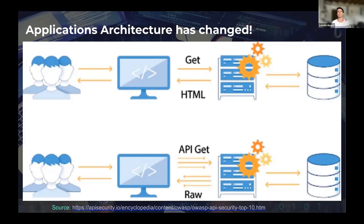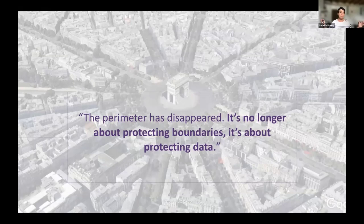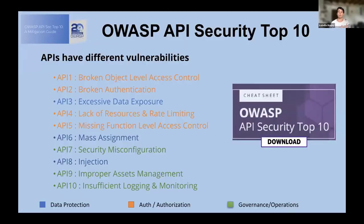Security has really changed. It used to be all about the perimeter — building walls around ourselves. But when you create APIs, you punch holes in those walls. Every time I open an API, I'm opening an avenue into the data within my data center. It's like the Arc de Triomphe in Paris where every avenue leads in. This is not about boundaries and walls anymore; it's about protecting the data.